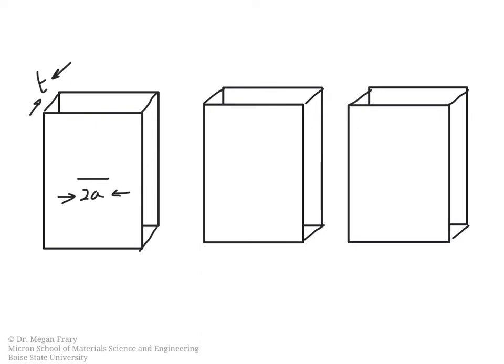Let's assume that we have a thin plate, and our thin plate has a crack in it. As usual, we will call the length of that crack 2a. We're going to call the thickness of our plate t. And assuming that our plate is thin enough, this is going to be loaded in plane stress — so no stress in the x3 direction.